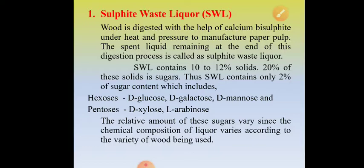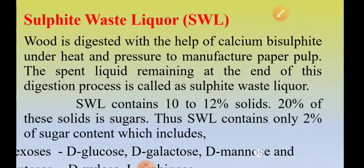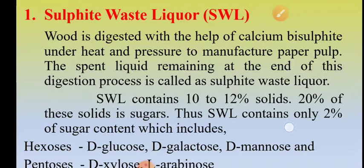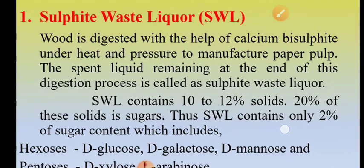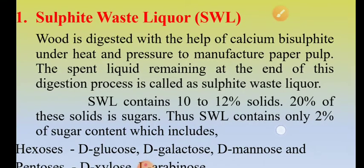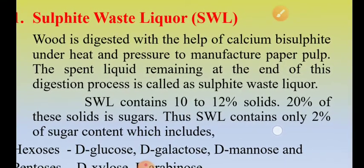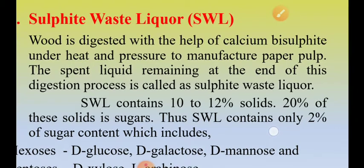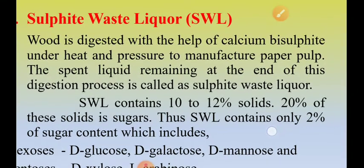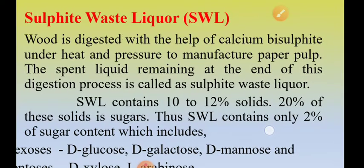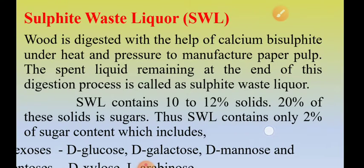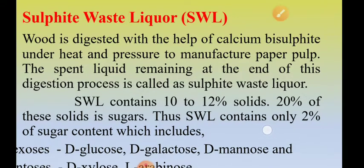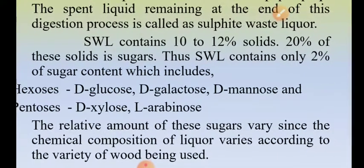Let us discuss the first one — sulfite waste liqueur. Wood is subjected to digestion with the help of calcium bisulfite under heat and pressure to manufacture paper pulp. The spent liquid that remains behind at the end of this digestion process is called sulfite waste liqueur.